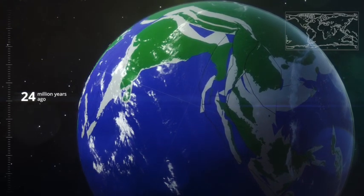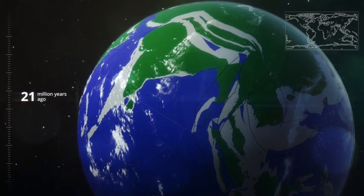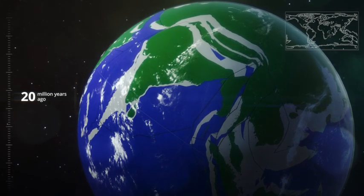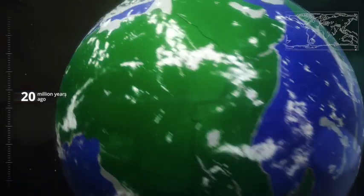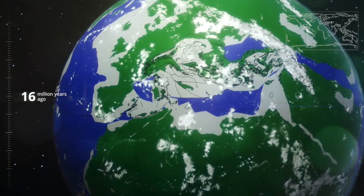At so-called subduction zones, one plate moves below another. The upper plate can get squeezed together and the rocks of the lower plate can be scraped off, creating massive mountain ranges all over the world. It is a never-ending process.